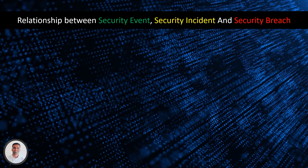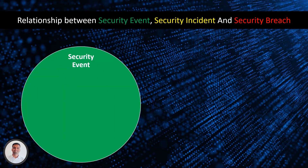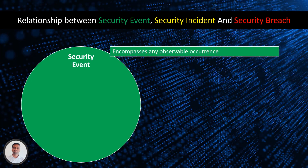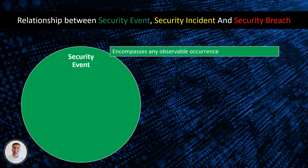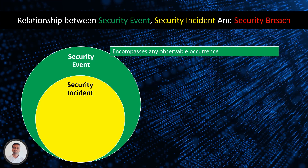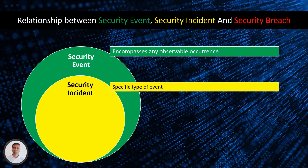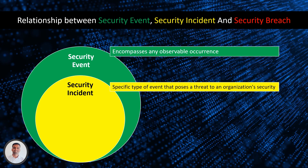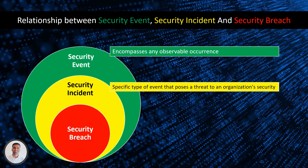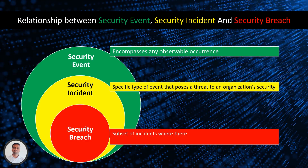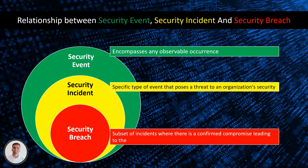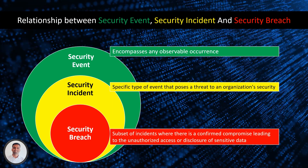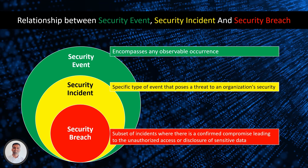To conclude: a security event is a broader term that encompasses any observable occurrence, while a security incident is a specific type of event that poses a threat to an organisation's security. A security breach is a subset of incidents where there is a confirmed compromise leading to the unauthorised access or disclosure of sensitive data, triggering legal obligations for notification.